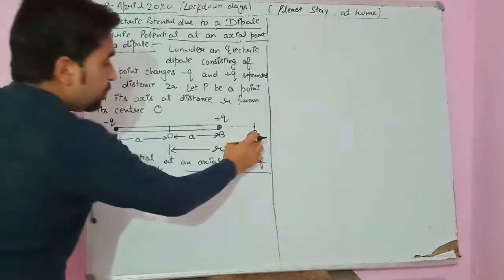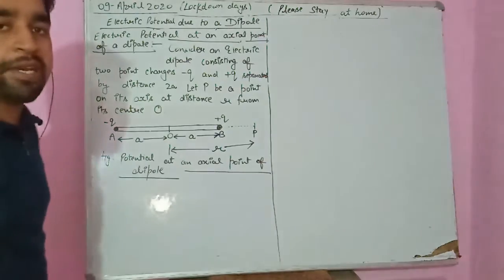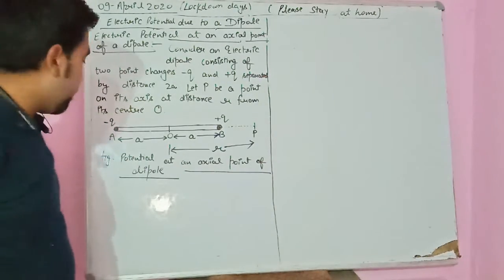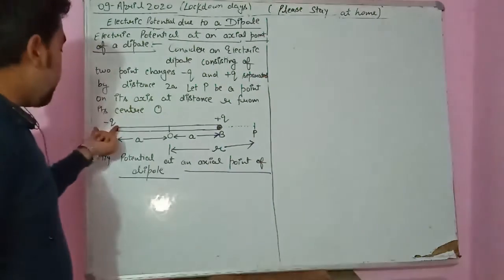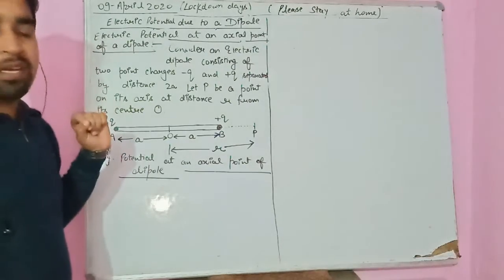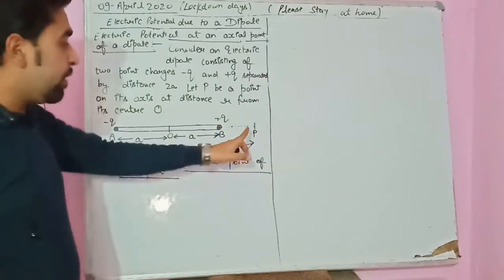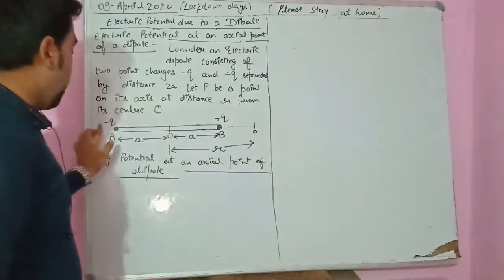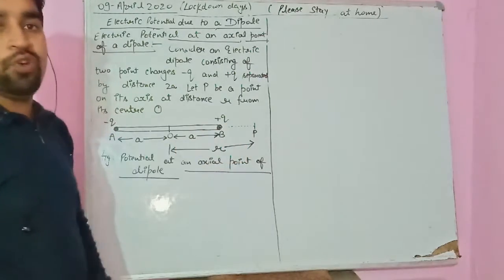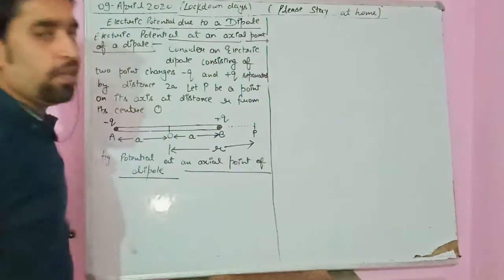The electric potential at point P will depend on two factors: the field created due to minus Q and the field created due to plus Q. Both charges are going to affect point P.